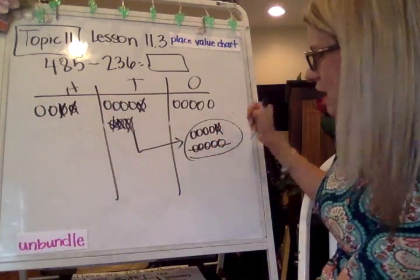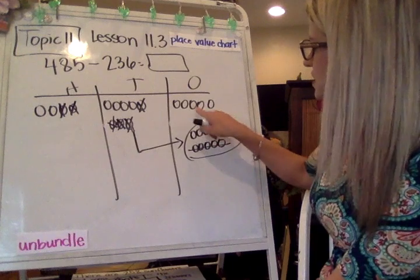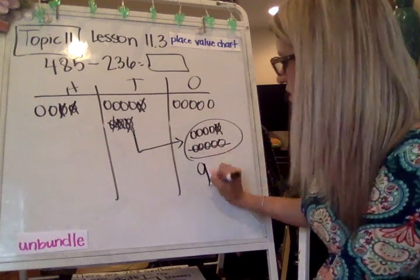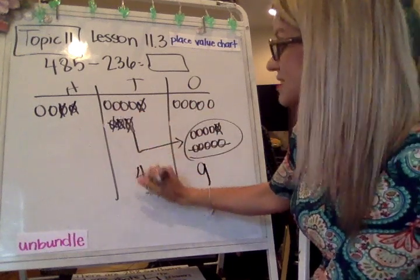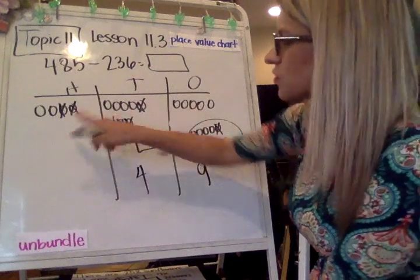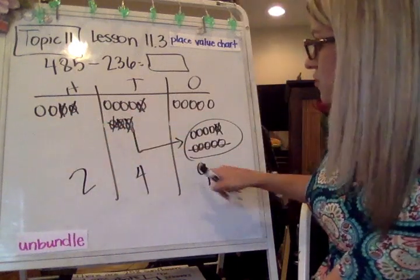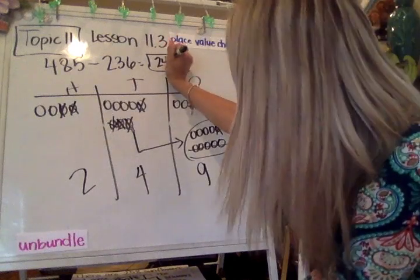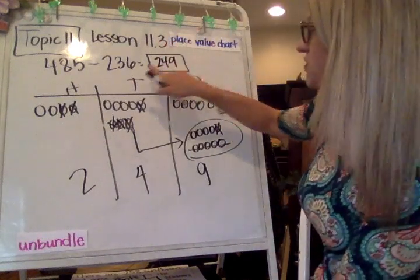Check and see what's left. So remember, these ones are gone. We're not going to count them. 1, 2, 3, 4, 5, 6, 7, 8, 9. We've got 9 in our ones place, 4 in the tens, and it's easy to see that because we've got the circles, and 2 in the hundreds. So 249. And we used our place value chart. We did have to do an unbundle.